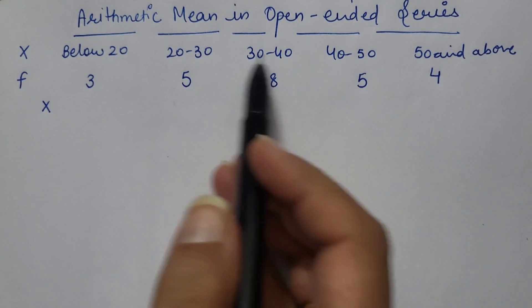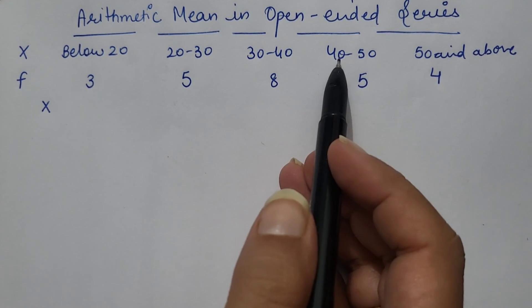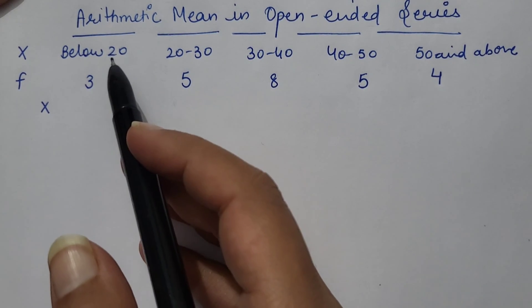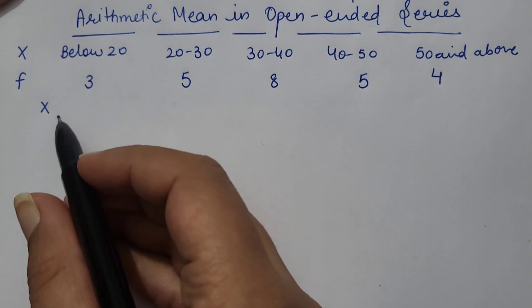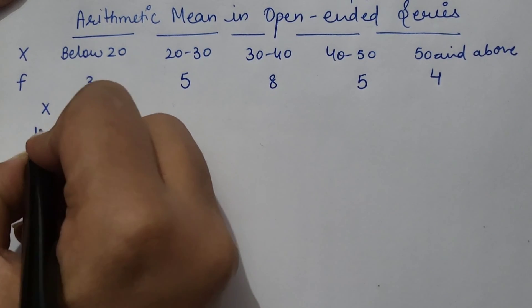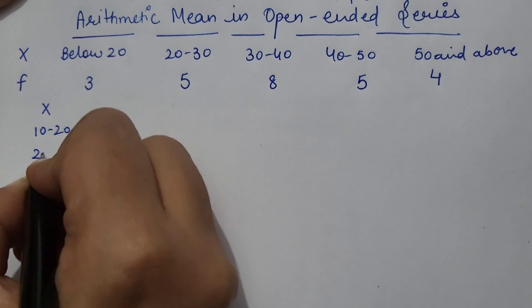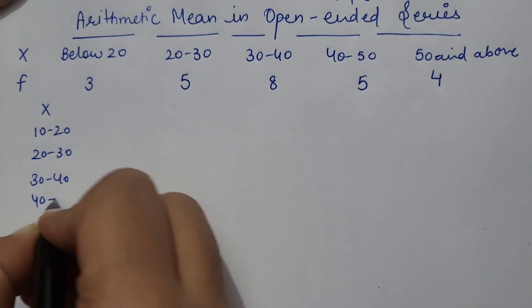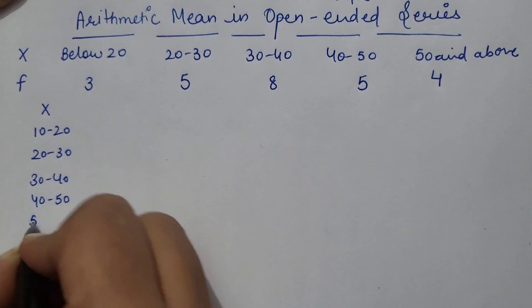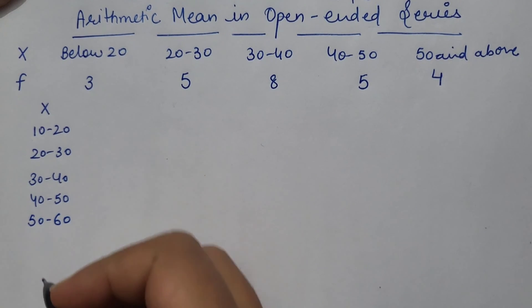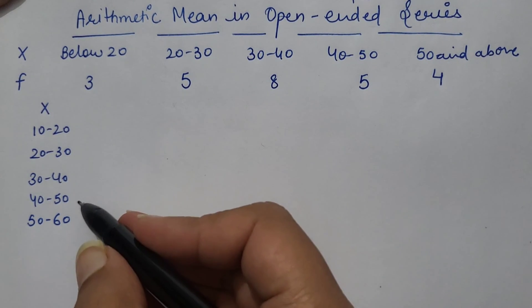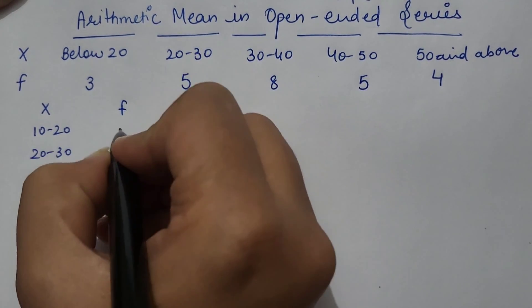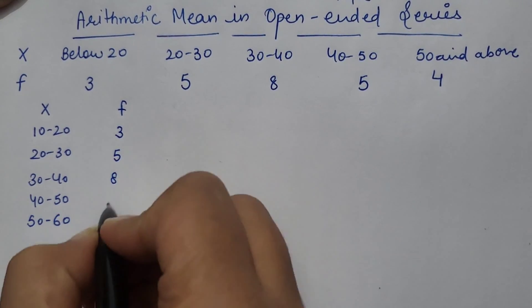So how it can be done? As interval is of 10, we will turn it into class interval with 10. So x here would be 10 to 20, 20 to 30. As normal exclusive series we will convert. And frequency 3, 5, 8, 5, 4.